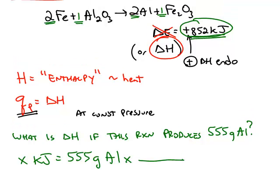We want to use our thermochemical equation as our conversion factor, and so we have to convert grams of aluminum into moles of aluminum using the periodic table, finding the molar mass of 26.98.